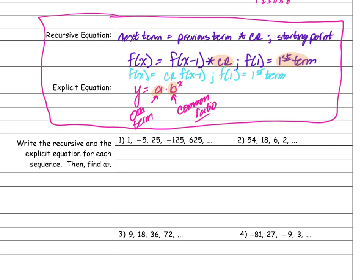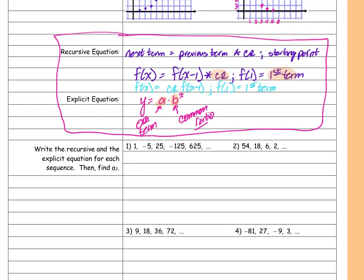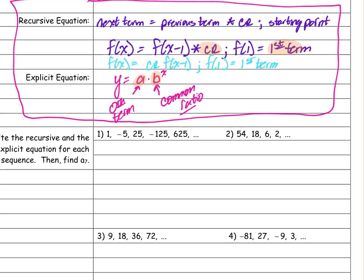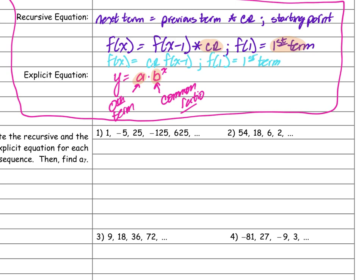On the first problem, write the recursive and explicit equation for each sequence, then find a(7). I'm going to change this into a table: term 1 through term 5. How am I getting from 1 to negative 5, negative 5 to 25, 25 to negative 125, negative 125 to 625? I am multiplying by negative 5. So my common ratio is negative 5.